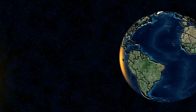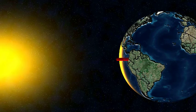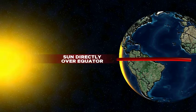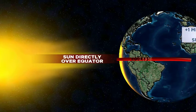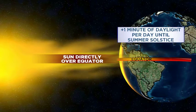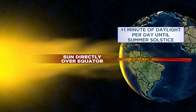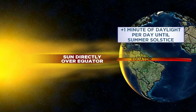Happy spring! Spring officially started on March 20th at 6:29 in the morning, kicked off by the spring equinox. That's when the sun's rays were straight right over the equator, providing the same amount of daylight and nighttime for most regions of the world.